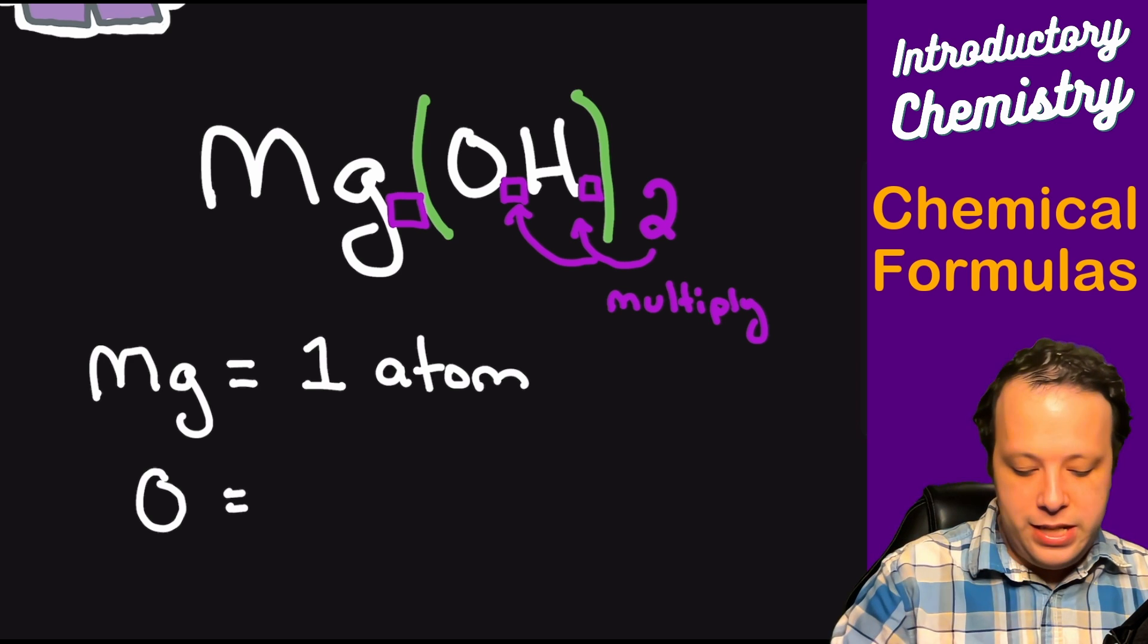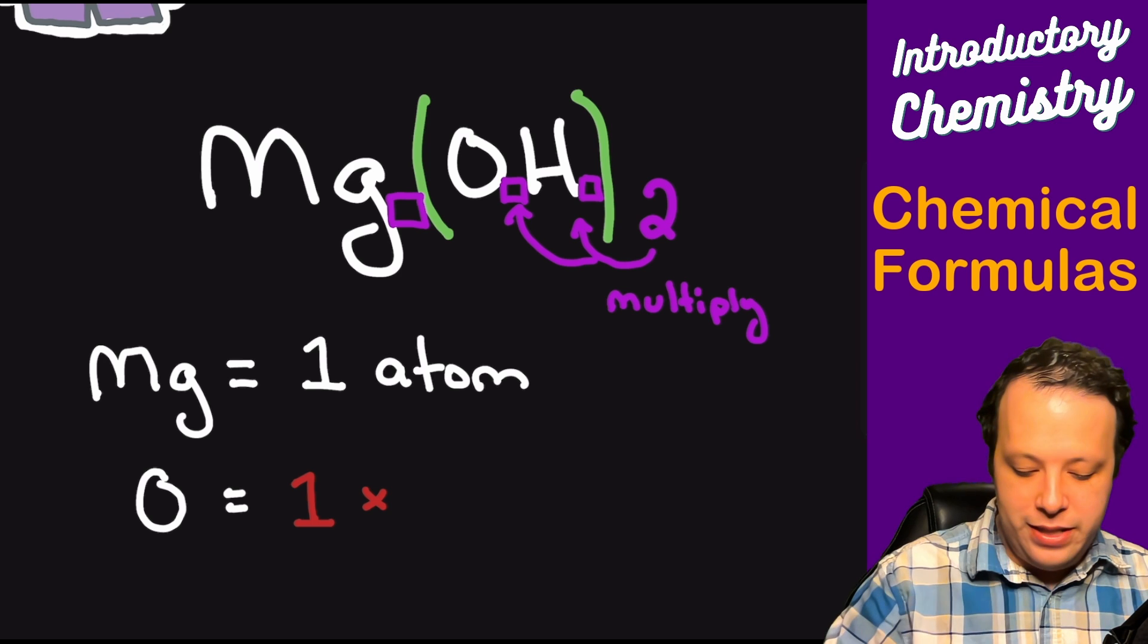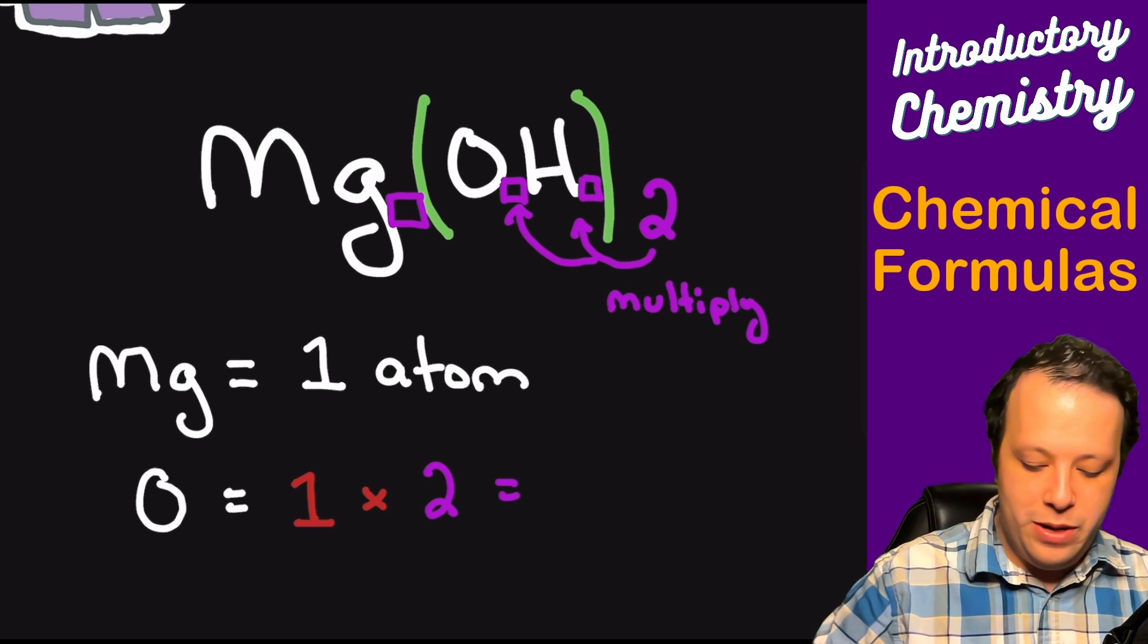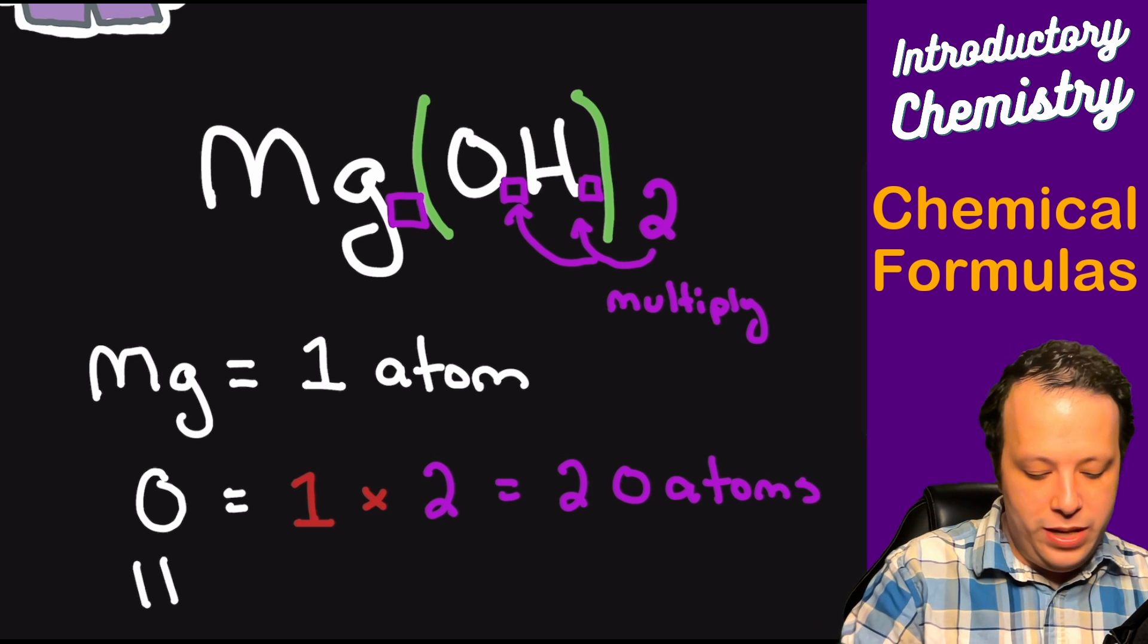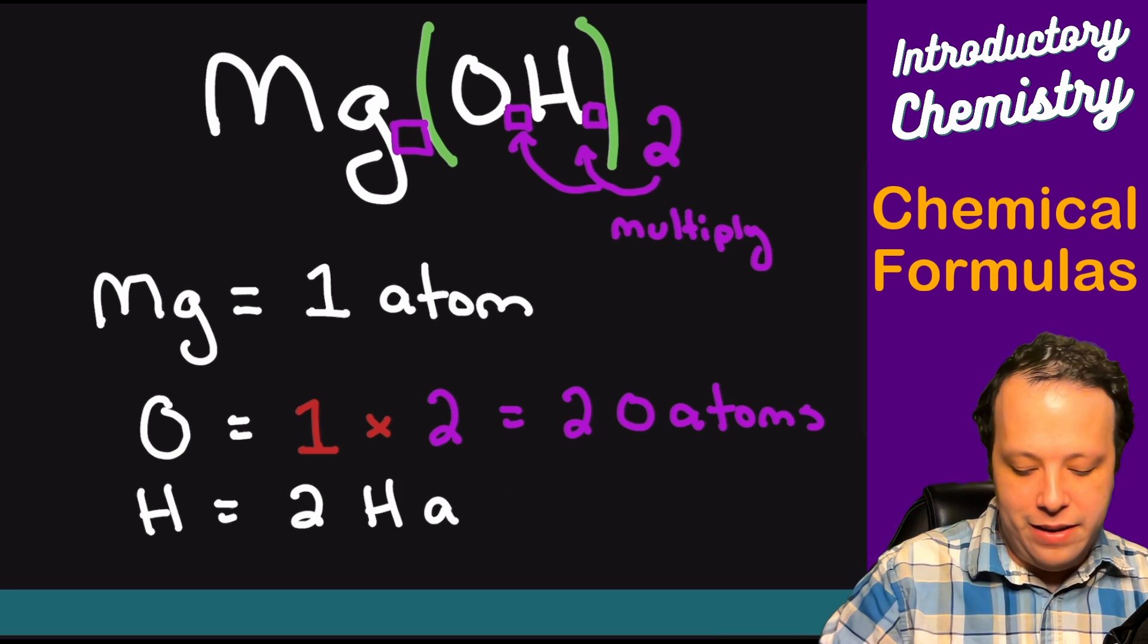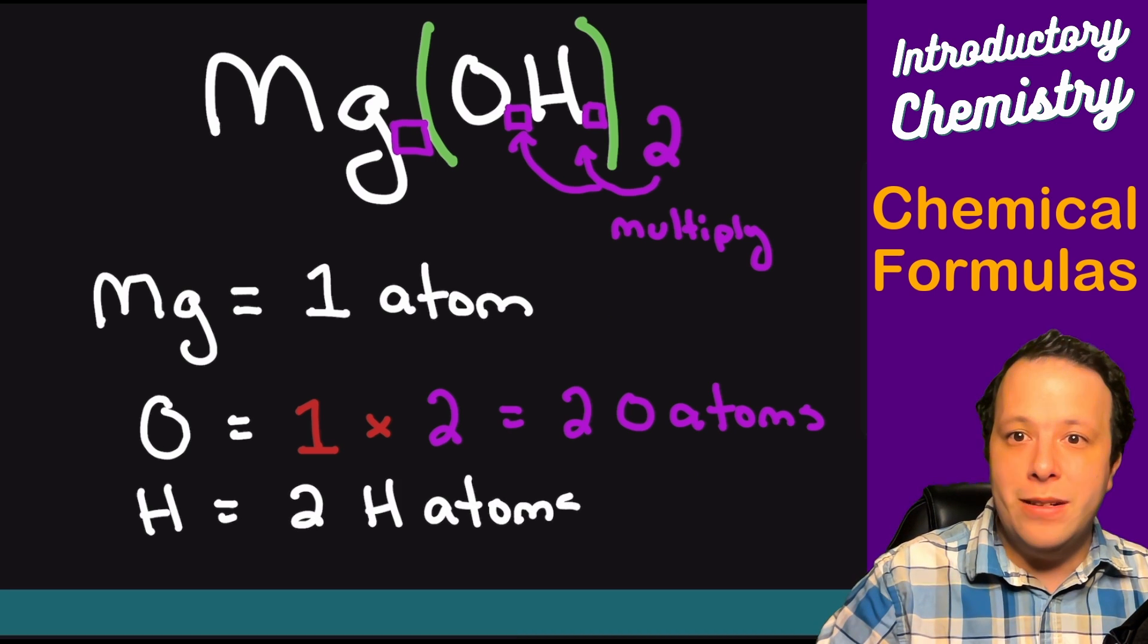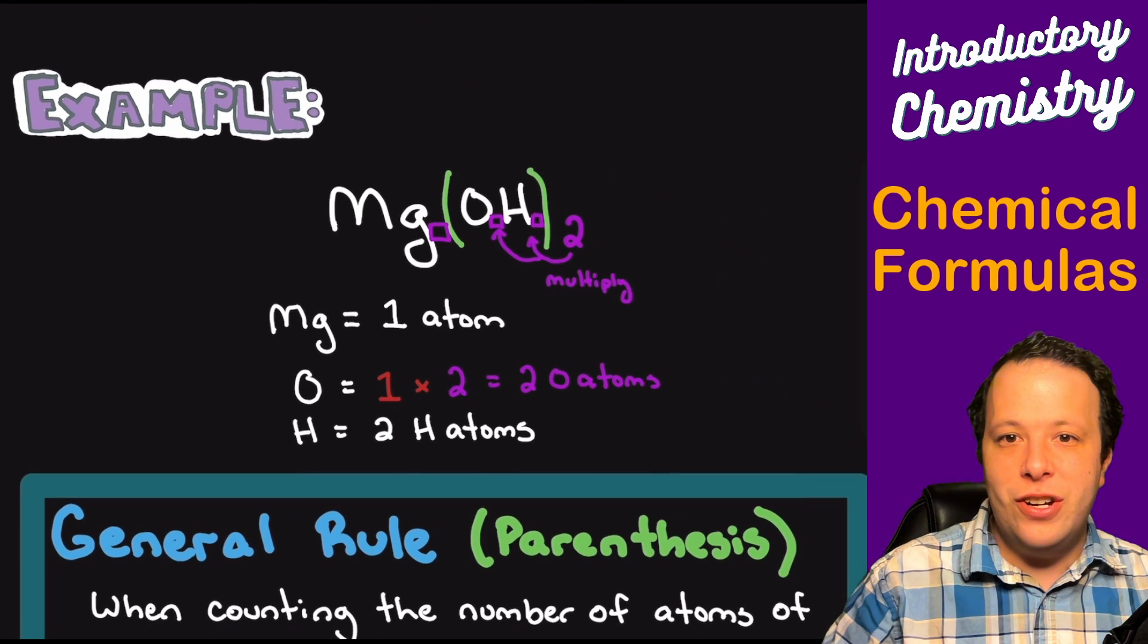So in a sense, the way that this works is if I have oxygen here, you are essentially taking one times two in this case, which is telling you, hey, you have two oxygen atoms. And that's the same thing for hydrogen. We do two times one, and we can see that we have two hydrogen atoms within magnesium hydroxide.